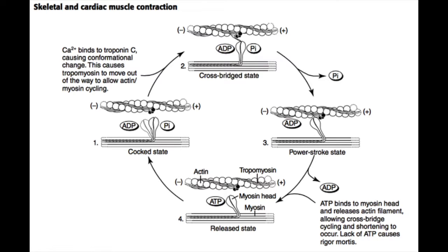Let's discuss in more detail how this power stroke between actin and myosin occurs. Calcium binds troponin C and tropomyosin moves out of the way. The myosin is already in a cocked state — pulled back — so once it attaches to actin it pulls the actin forward. The myosin gets into this cocked state by binding an ATP molecule and hydrolyzing it into ADP and inorganic phosphate. In the cocked state, myosin is bound to ADP and inorganic phosphate.